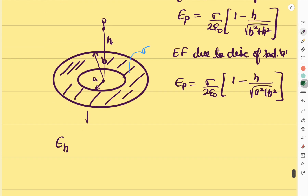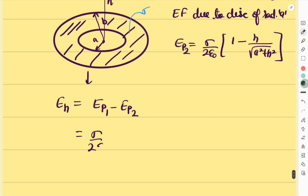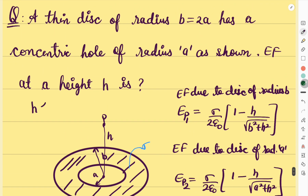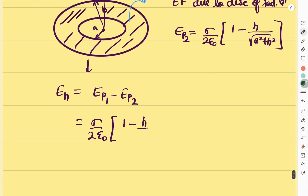The resultant electric field at height h is EP1 minus EP2. So it equals σ/(2ε₀) · [1 − h/√(b² + h²)] minus σ/(2ε₀) · [1 − h/√(a² + h²)]. The condition given is that h is very small compared to both a and b. So we apply the approximation: h/√(b² + h²) ≈ h/b, and similarly h/√(a² + h²) ≈ h/a.